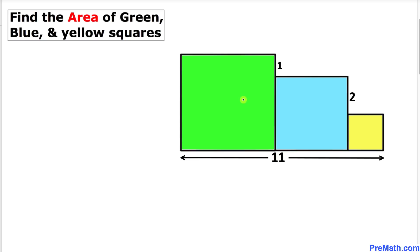Let's get started with the solution. Since we are dealing with squares, the side length of each box is going to be the same. Let's suppose that the side length of this green box is x units. If this side is x, this side is x, this side is x, and this side is x as well.